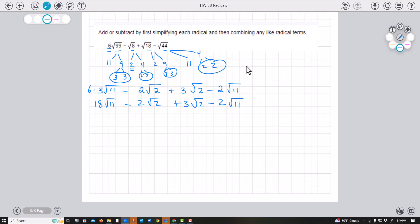Now, the only ones of these that I can combine are the ones that have like terms, meaning what's under the radical. So I can actually do 18 minus 2, which would be 16, and remember the radical stays the same.